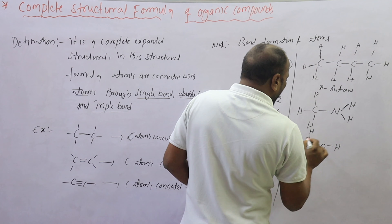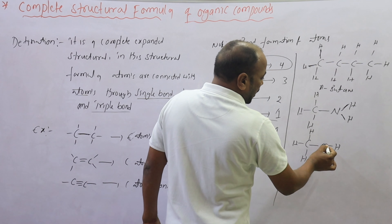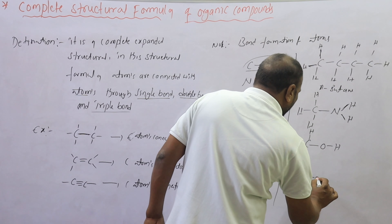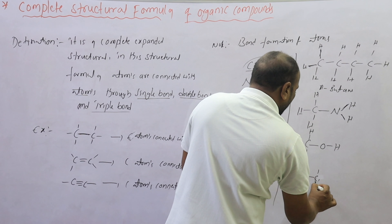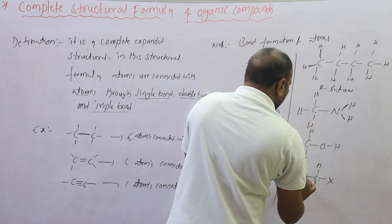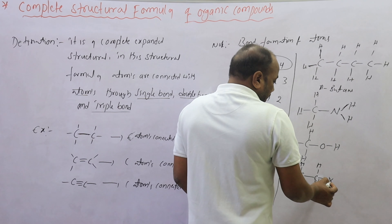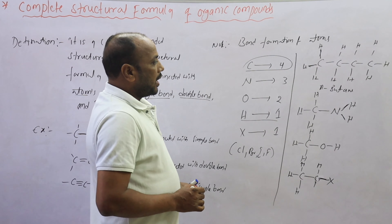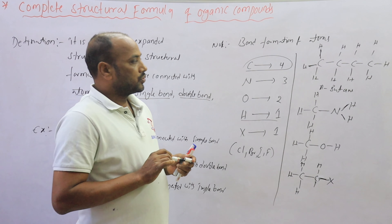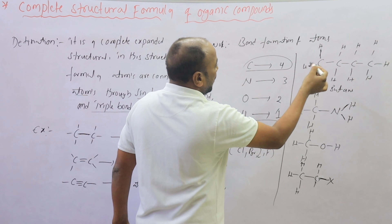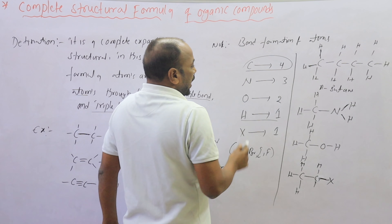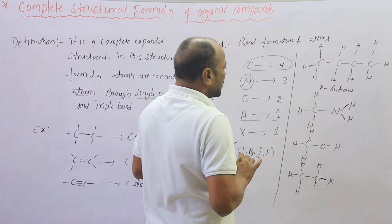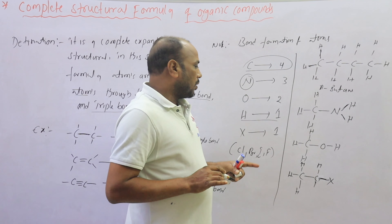Oxygen has two bond formations — one bond connects to the carbon atom and another bond connects with a hydrogen atom. The halogen group also has one bond formation — the halogen group is connected with only one bond to the carbon atom. So carbon connects with four bonds, nitrogen with three bonds, oxygen with two bond formations, hydrogen with one bond formation, and halogen with one bond formation.